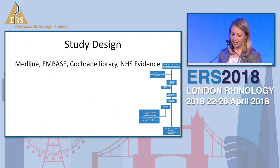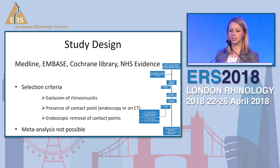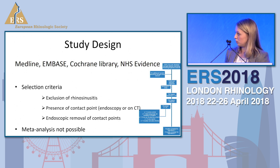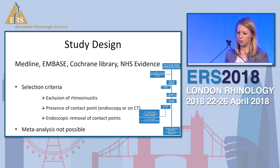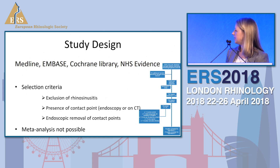We used the following databases, and the selection criteria for the second null hypothesis involved looking at studies that excluded rhinosinusitis, looked at contact points on either CT or endoscopy, and endoscopically removed the nasal contact points. A meta-analysis was not possible because of variability between studies, and we used the PRISMA guidance to perform the systematic review. We had 19 studies for the second hypothesis and three for the first.